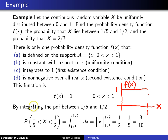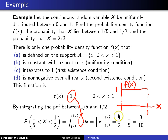If you integrate this PDF, which is 1, between one-fifth and one-half, you will get the probability of falling between one-fifth and one-half. The integral of 1 is just x. When you plug in the upper limit of one-half and the lower limit of one-fifth, you get three-tenths. So, three-tenths is the probability that x will fall between one-fifth and one-half.